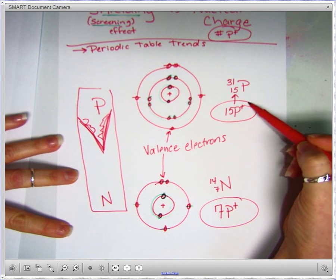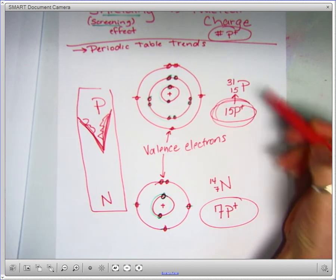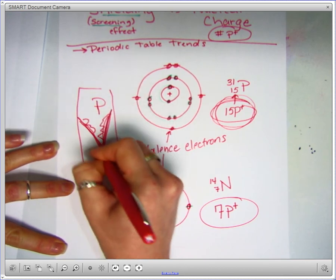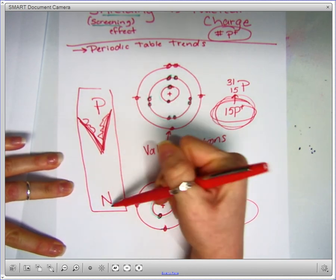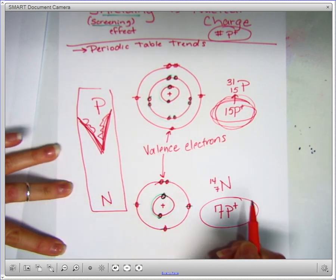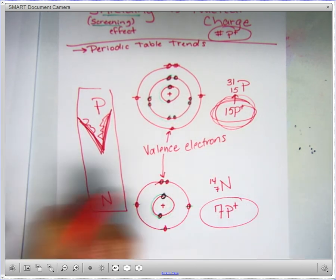And in that case, phosphorus has more protons. And therefore, in this scenario, when comparing these two specific atoms and their Bohr diagrams, we can see that phosphorus has a greater nuclear charge.